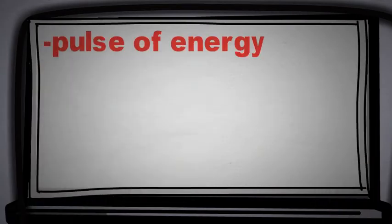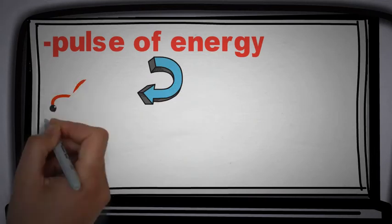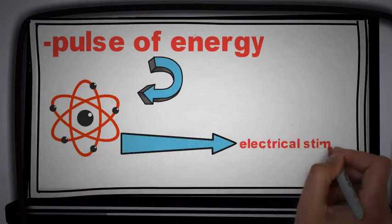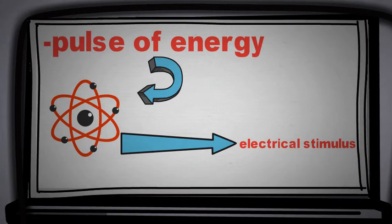We have to fire a pulse of energy towards isolated microscopic particle, and then measure the electrical stimulus or feedback. That is how we know whether the particle is in spin-up or spin-down state.